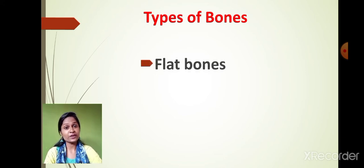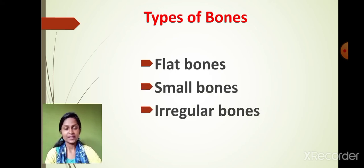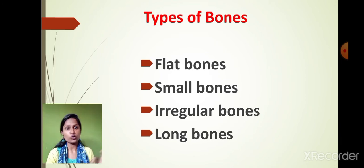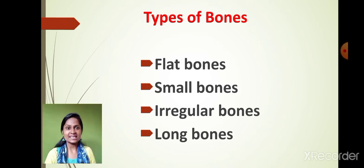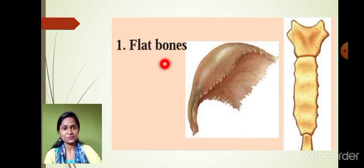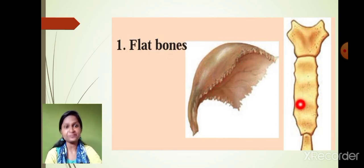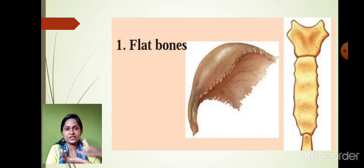The first type is the flat bone. The second type is the small bone. The third is the irregular bone. The fourth type is the long bone. As the name suggests, a flat bone is completely flat from both sides. For example, the sternum is a flat bone present in the middle part of the chest.